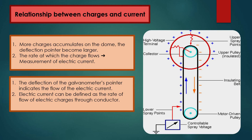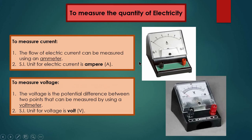The rate at which charge flows indicates the measurement of electric current. According to the definition, current is the rate of change of electric charges. The deflection of the galvanometer's pointer indicates the flow of electric current. Electric current is defined as the rate of flow of electric charges through a conductor. To measure current, you require an ammeter — the device with symbol A — and the SI unit for electric current is ampere.